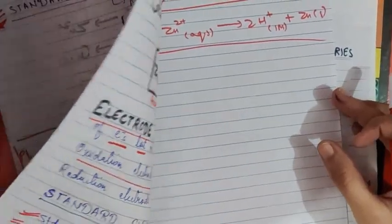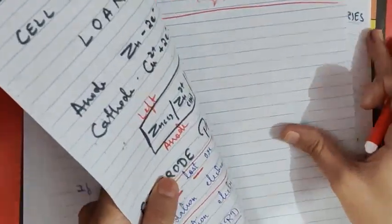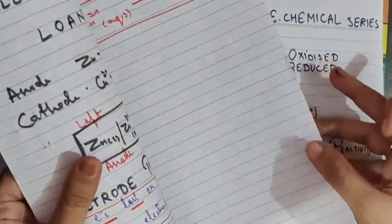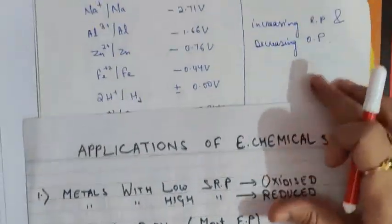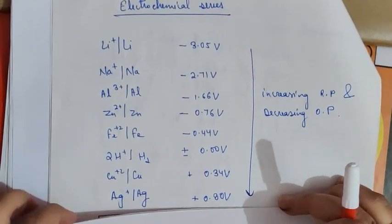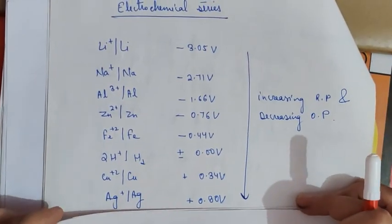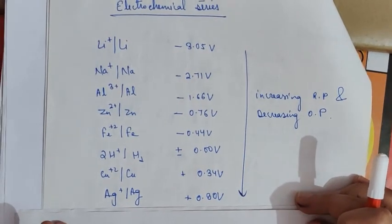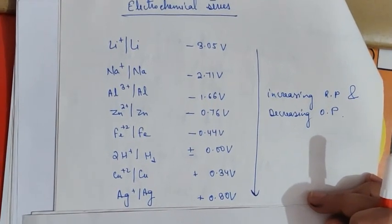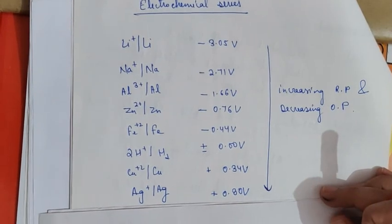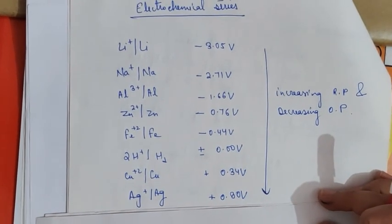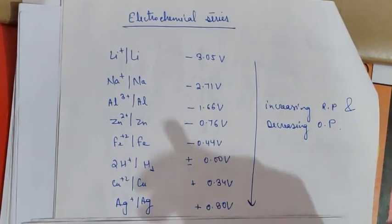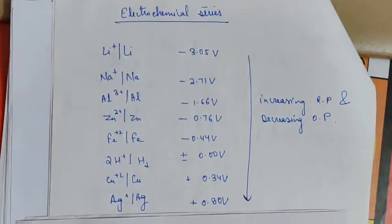That was just a recap of the last lecture. Today in our class we will study about the electrochemical series and the Nernst equation. Both topics are extremely important in this chapter because most of the questions in your boards are asked from the Nernst equation, and the Nernst equation is based on the electrochemical series.